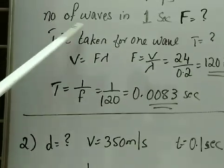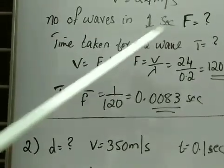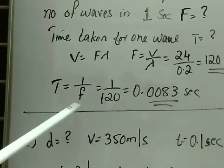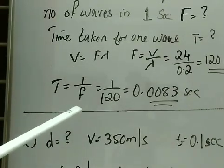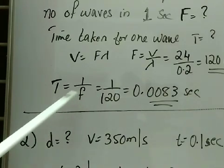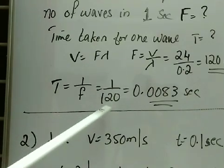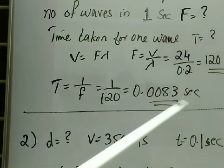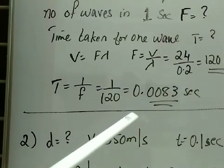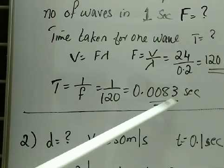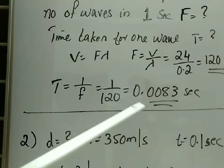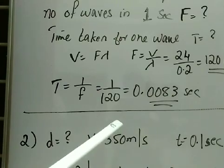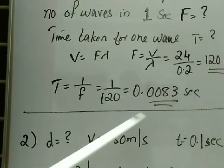Now we have to calculate the time taken for 1 wave, that is the time period. The formula is T = 1/F = 1/120, which gives 0.0083 seconds. In your textbook it is written as 8.3 × 10⁻³. Either you can write it that way or directly divide 1 by 120 to get 0.0083 seconds.